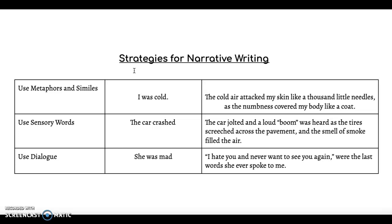The next strategy is using sensory words. Instead of saying something like 'the car crashed,' you show, don't tell. So it would be: 'The car jolted and a loud boom was heard as the tires screeched across the pavement and the smell of smoke filled the air.' It's more in depth and reaches those five senses when you're writing.